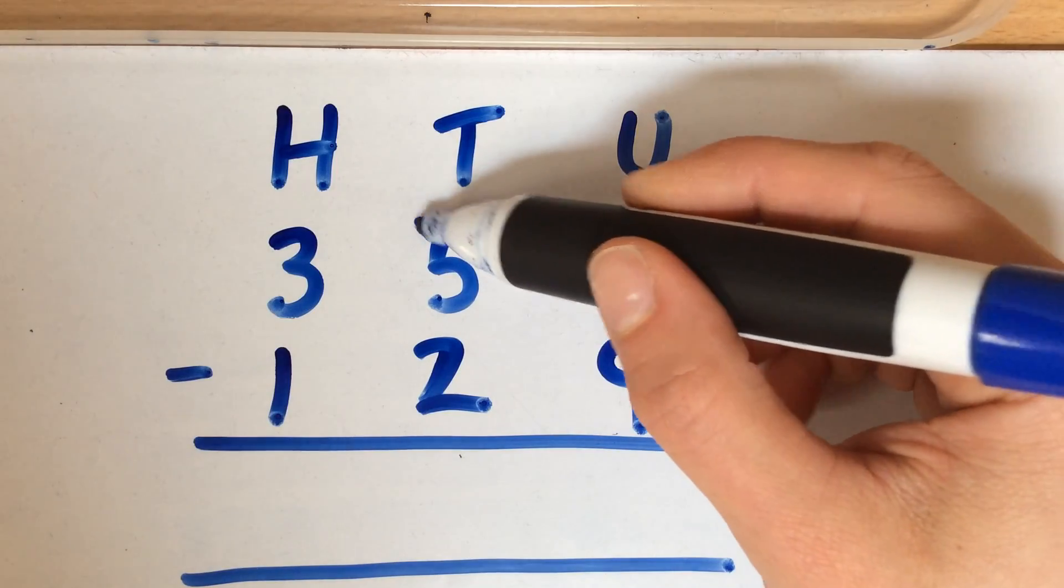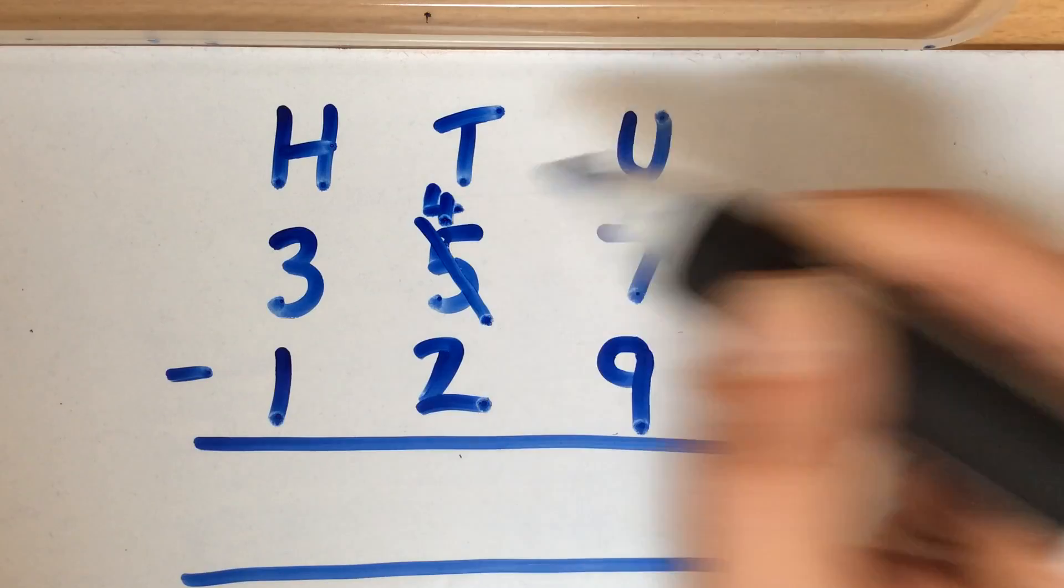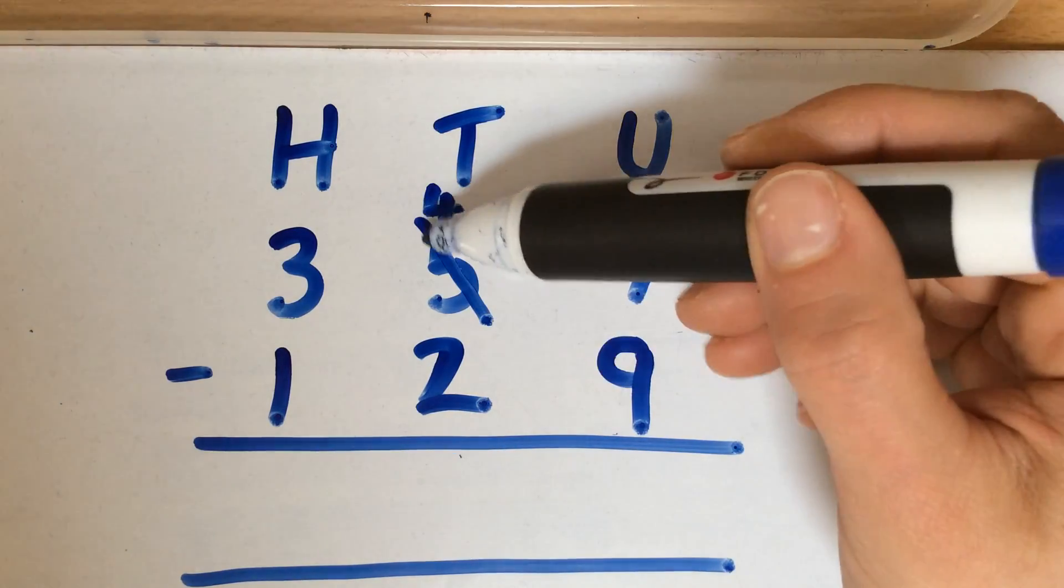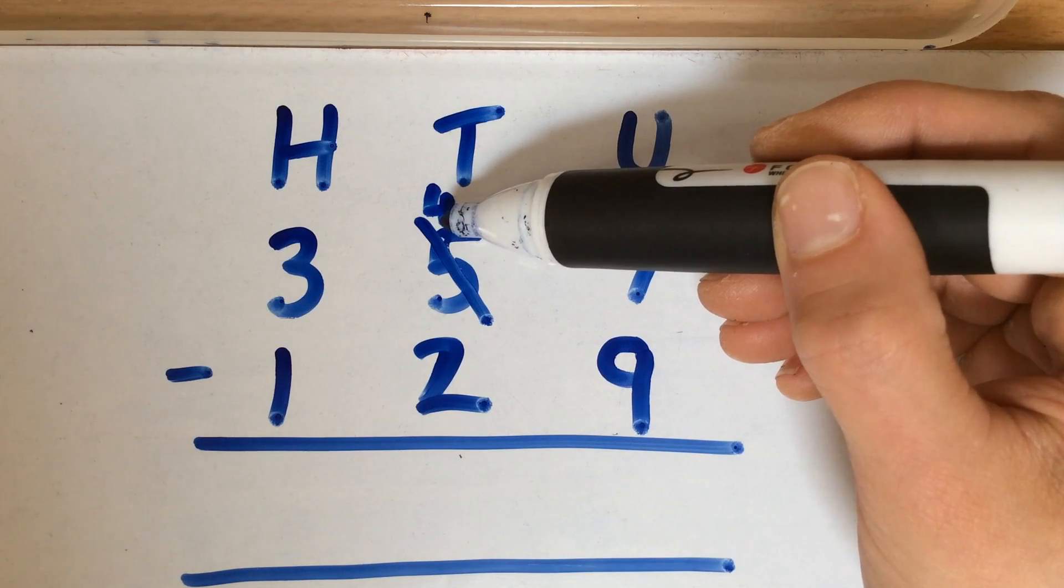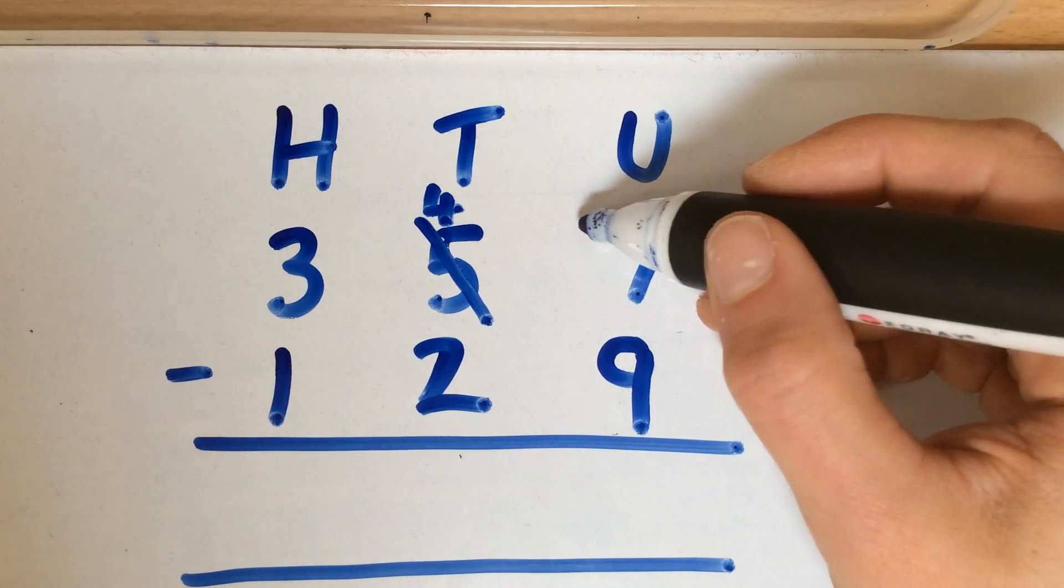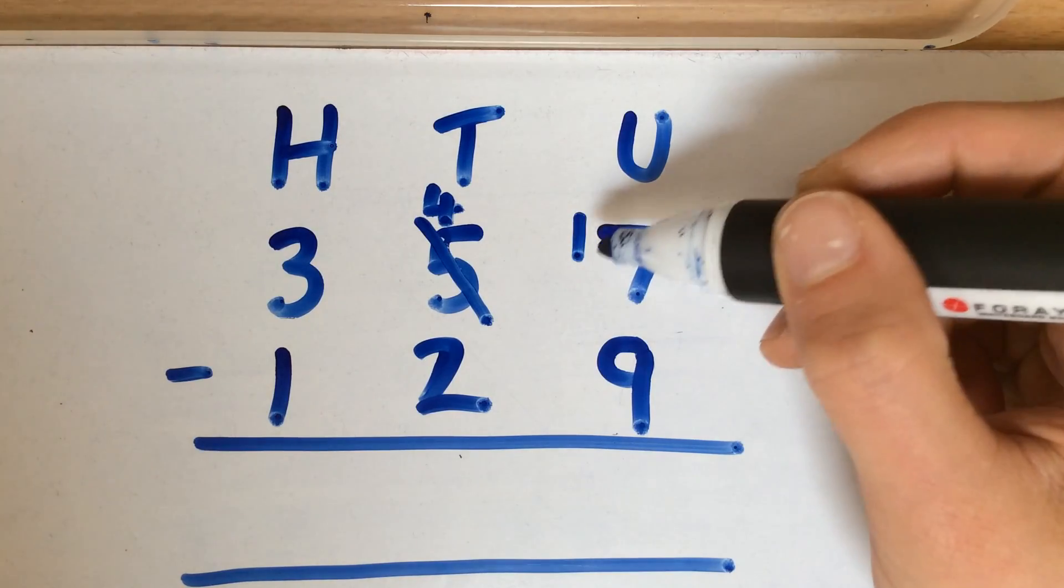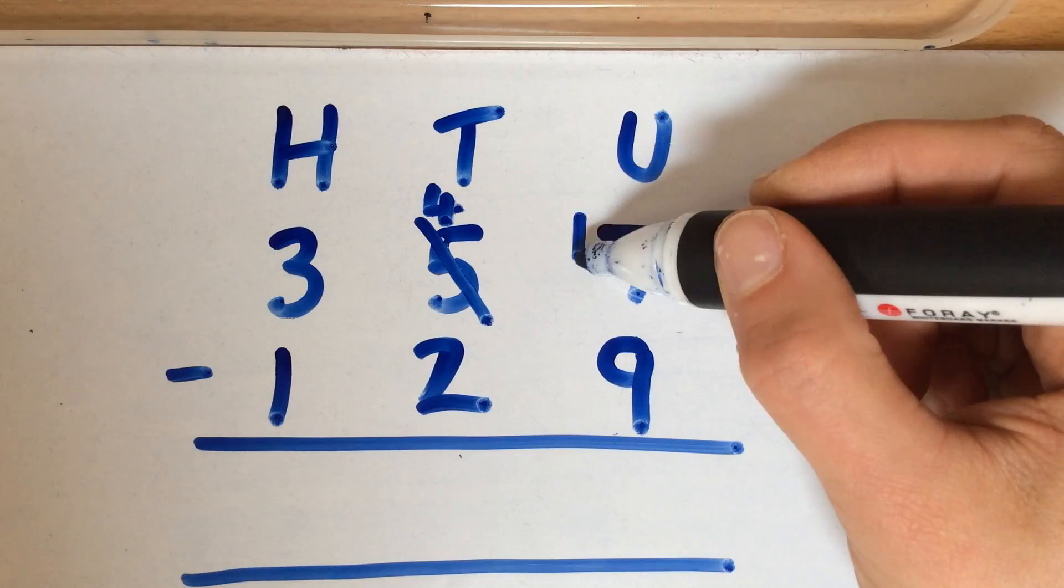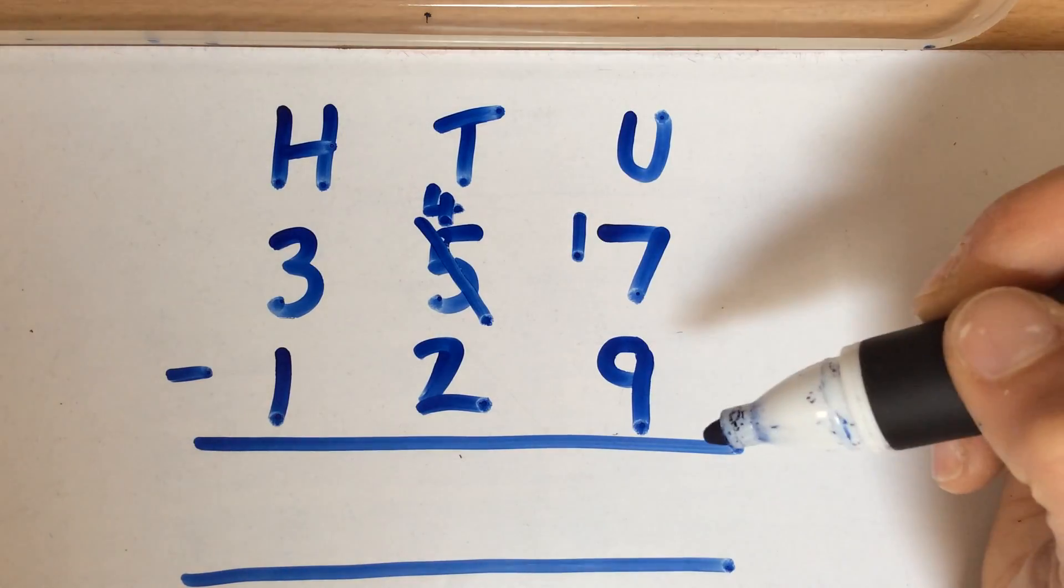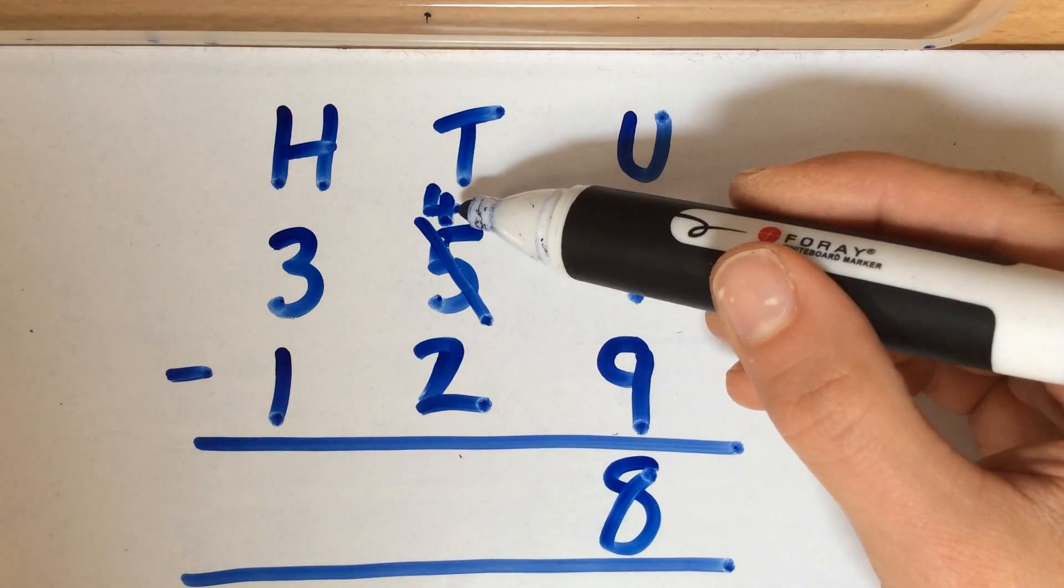So we're crossing out the 5, now we've got 4 lots of 10 instead, and it's very important to keep a track of this working out. So we're crossing out the 5 lots of 10, we're writing 4 lots of 10 instead. The extra 10 is then written as a 1 next to the 7. So the 7 becomes 17, because you're adding in an extra lot of 10. You've now got 17 take away 9, which can be done, which is an 8.